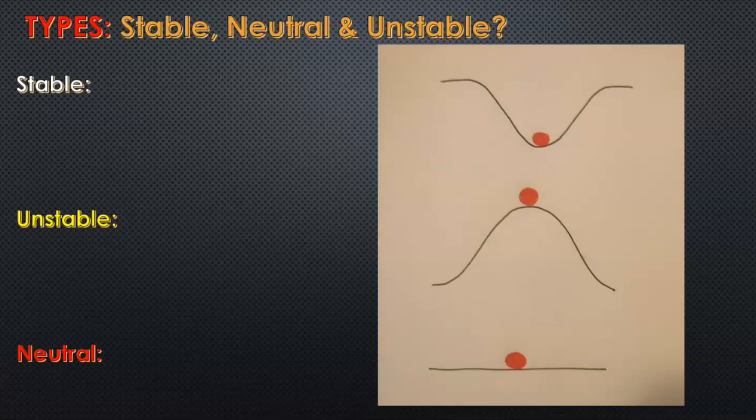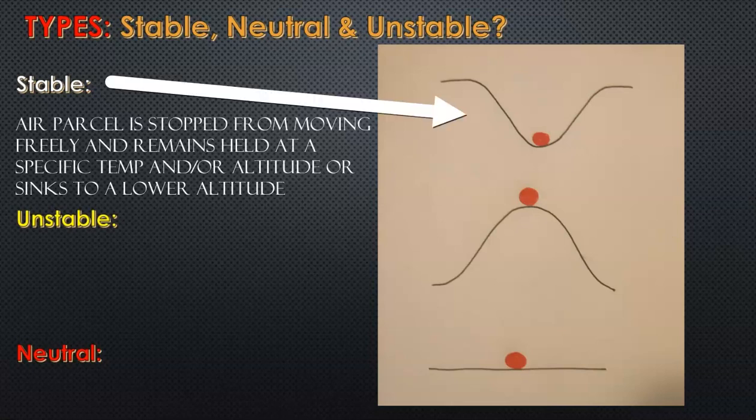An air parcel can go through different phases — it can be stable and then become neutral or even unstable based on different conditions. The top diagram shows a basic understanding of these terms. In a stable atmosphere, the air parcel in the troposphere tends to stay at the same altitude — it may try to move but is stopped or sinks to a lower altitude.